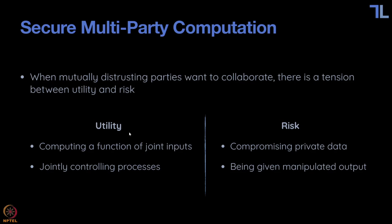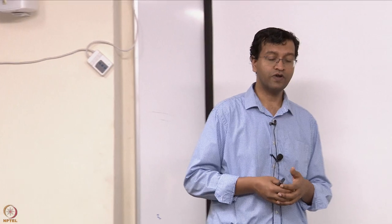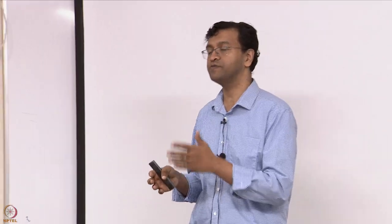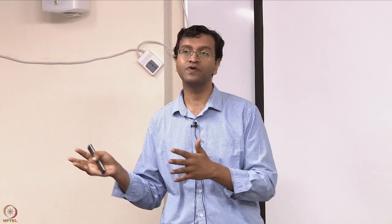The utility you would get if you could collaborate is that you could compute the outcome. The database is one input, the query is one input, the answer to the query is something at least one party wants to get — that's utility. This is an instance of function computation: Alice has x, Bob has y, and Bob wants to learn f(x, y).